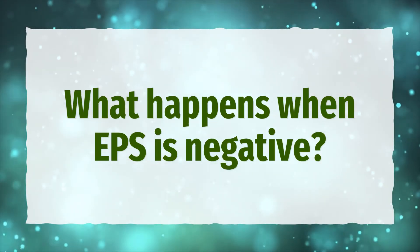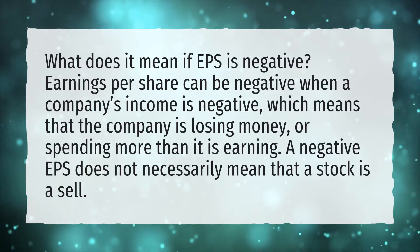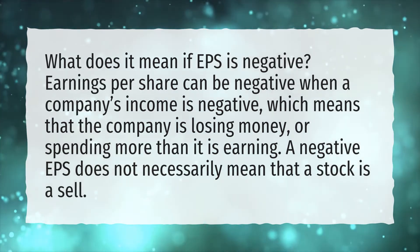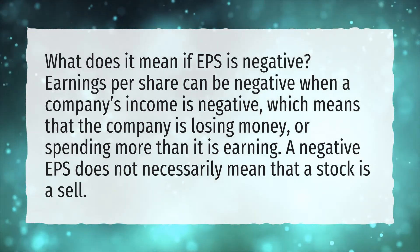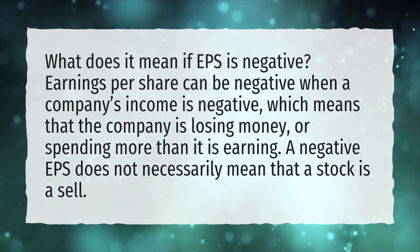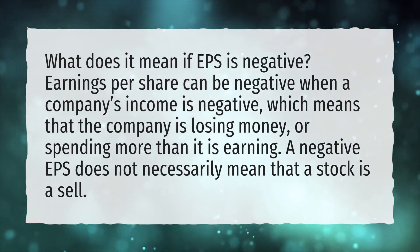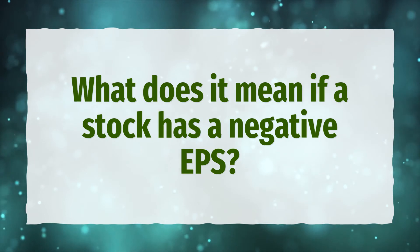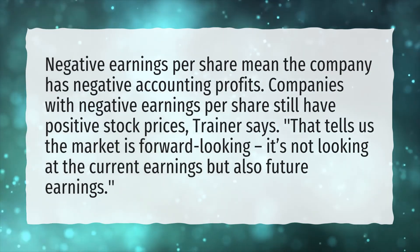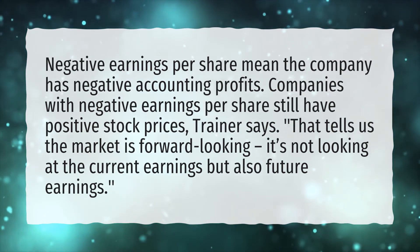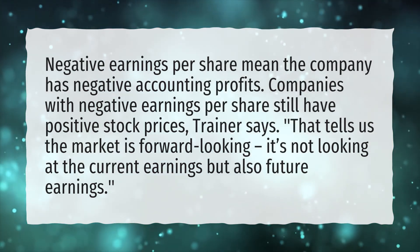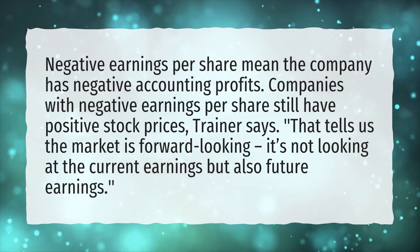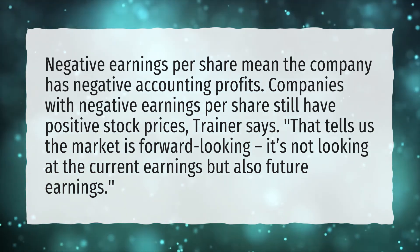What happens when EPS is negative? Earnings per share can be negative when a company's income is negative, which means that the company is losing money, or spending more than it is earning. A negative EPS does not necessarily mean that a stock is a sell. Negative earnings per share mean the company has negative accounting profits. Companies with negative earnings per share still have positive stock prices — that tells us the market is forward-looking. It's not looking at the current earnings but also future earnings.